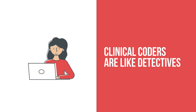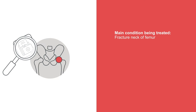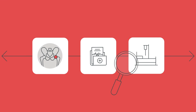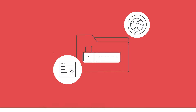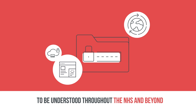Clinical coders are like detectives, investigating all aspects of their journey from start to finish. You begin by reviewing the documentation, physical and or digital. For example, an elderly woman who had a hip operation two days ago. From her medical notes, you find out the main condition being treated, any relevant comorbidities, and the procedure performed. Then, utilizing the ICD-10 and OPCS procedure classifications, you find and assign the special alphanumeric codes and record these into the organisation's patient administration system. This coded data can be understood throughout the NHS and beyond, and used to plan for future patient care.